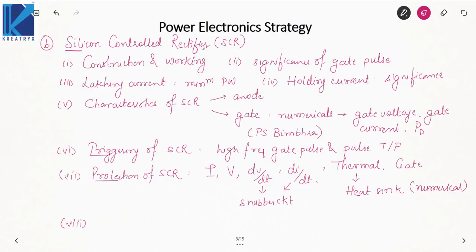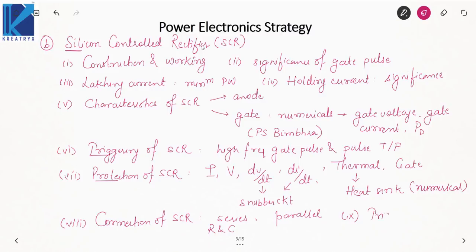The next topic is connections of SCR, though it is not very important for the GATE point of view. You have to study series and parallel connection, and understand the values of resistance and capacitance required in series connection. That is all about the silicon controlled rectifier. If you want, you can also study triggering circuits — resistance circuit, RC circuit, UJT circuit — but this is not required for GATE, so you can leave it.